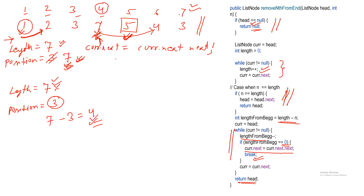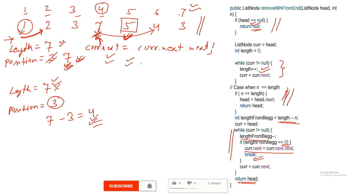This is a simple way to delete a node whose position is given from the end of the linked list. I hope you understood this video. If you have any doubts please write in the comment section, and if you understood please write 'understood'. Please subscribe to my channel if you like this video. Till then have a great day and goodbye.